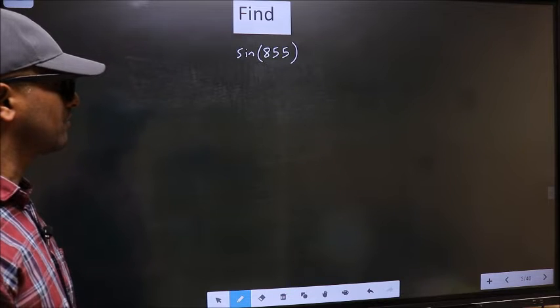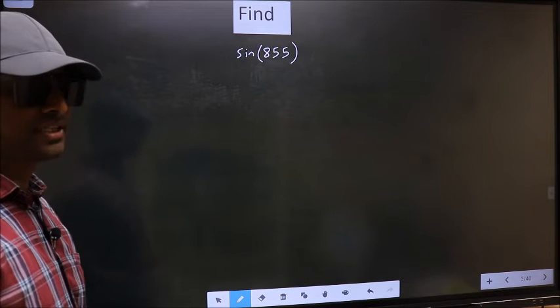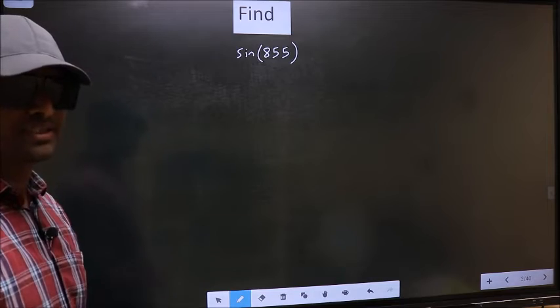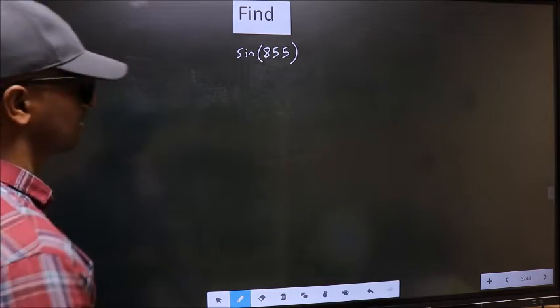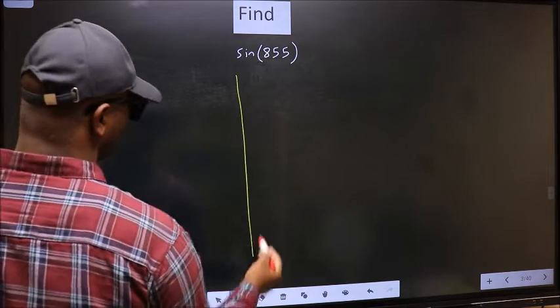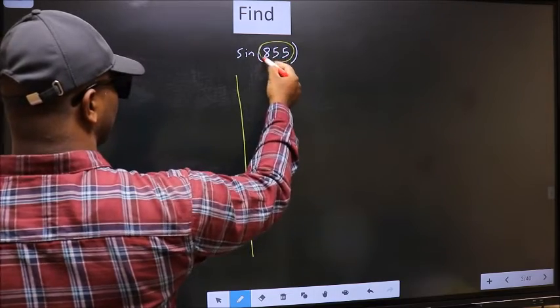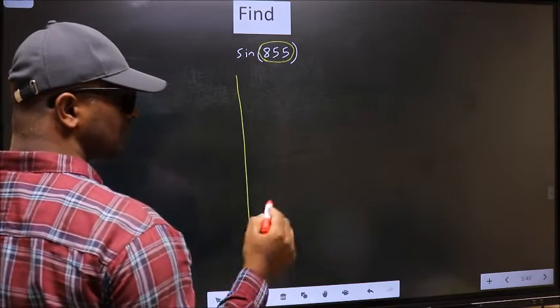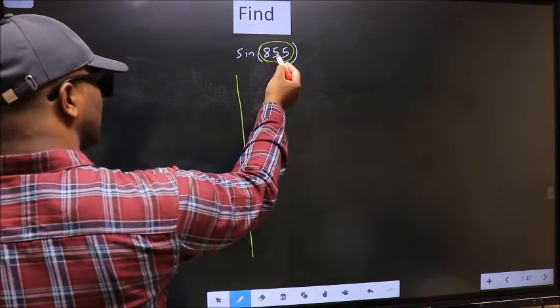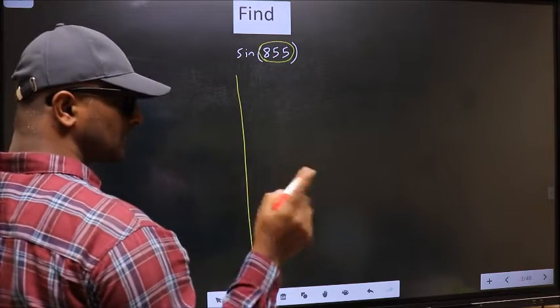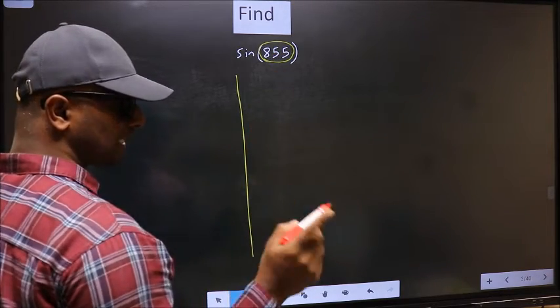Find sin(855). To find this, we should follow this method. See, here we have 855. Now you should check: 855 lies between which two multiples of 180?